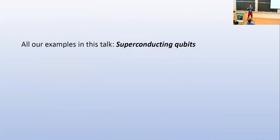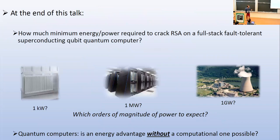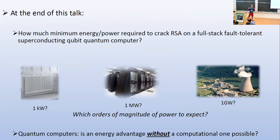All the examples will be based on superconducting qubits. At the end of this talk I would like to give some very rough idea of the amount of energy or power that we need to, for instance, crack RSA on a fault-tolerant superconducting qubit quantum computer. I will also try to give some elements to see if we can have an energy advantage without a computational one — that is, we take a problem that can be solved by both a classical and a quantum computer and compare how much energy each costs.